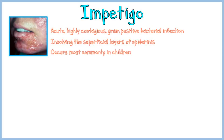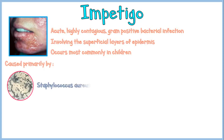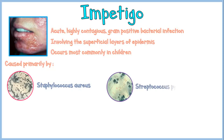Impetigo is caused primarily by two species of bacteria: Staphylococcus aureus, a gram-positive coccus arranged in clusters, and Streptococcus pyogenes, a gram-positive coccus arranged in chains.